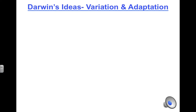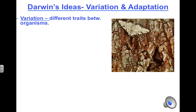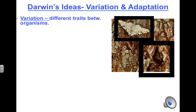Let's break down his ideas of natural selection even more. First, he believed organisms varied in traits. The picture shown is of a tree with two moths — are you able to see both of them? What is a variation between the two moths? The variation is their body color: one is light colored and the other is dark colored.